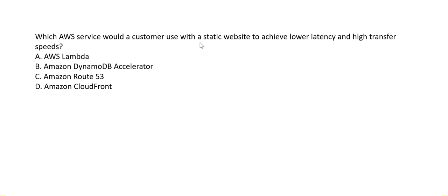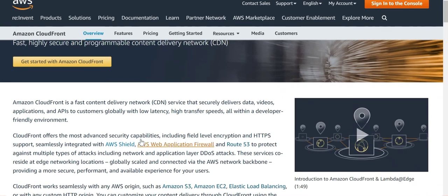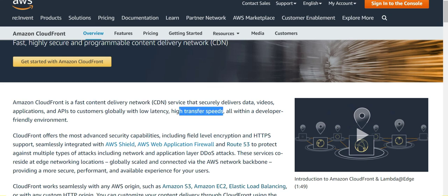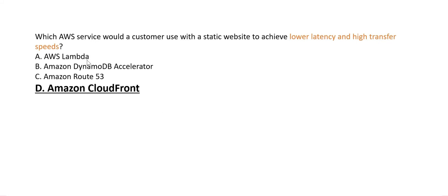Which AWS service would a customer use with a static website to achieve lower latency and high transfer speeds? The keywords are 'low latency' and 'high transfer speeds' — the answer is always CloudFront. CloudFront is a fast content delivery network providing low latency and high transfer speeds. Lambda is for serverless functions with a 15-minute processing limit. DynamoDB Accelerator (DAX) provides caching for DynamoDB databases. CloudFront is the correct answer.